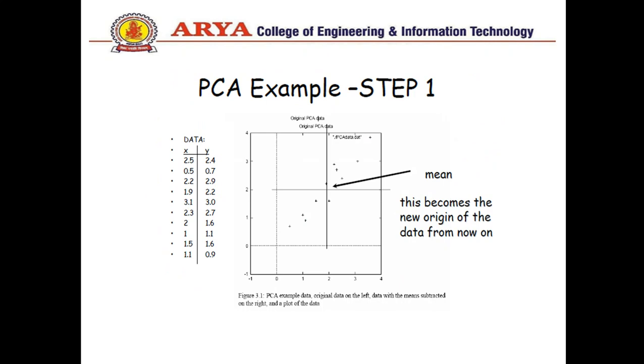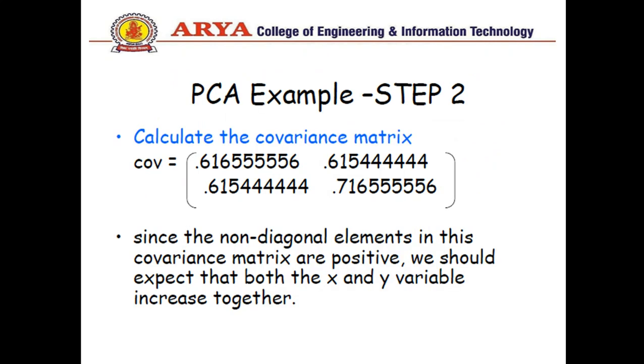First of all by using these two data sets we have to calculate covariance matrix as well as x_mean and y_mean. When we evaluate or calculate covariance matrix we get the values for x comma x that is 0.6165. In the same manner for x comma y it will be 0.615, for y comma x will be same 0.615, and for y comma y 0.7165. Non-diagonal elements in this covariance matrix are positive, we should expect that both the x and y variable increase together.